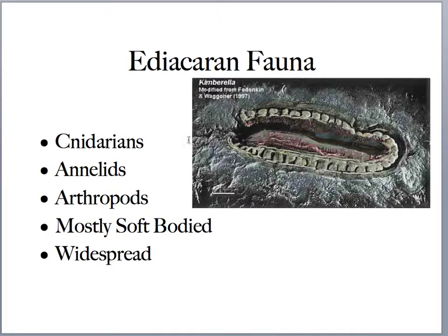In this Ediacaran fauna, we see the beginnings of cnidarians — the soft-bodied jellyfish, sea anemones, and corals — and the beginning of annelids, which are the worm phyla, and arthropods, which are the crustaceans like crabs and lobsters, with the terrestrial ones eventually becoming insects and arachnids. One thing they all shared in common: they were soft-bodied, but they were widespread — we find them in North America, Australia, Europe, China, and Africa — showing that life was really taking off during this time.